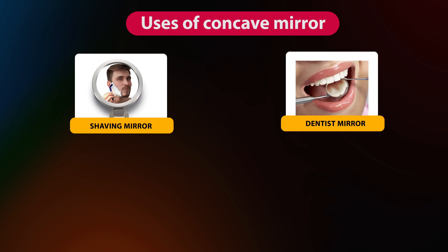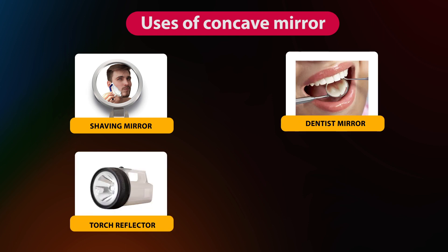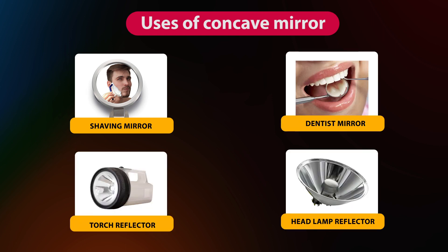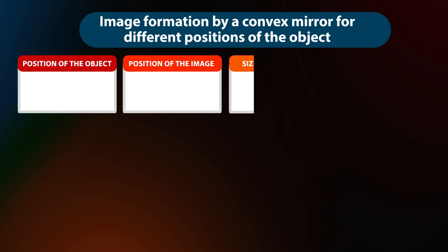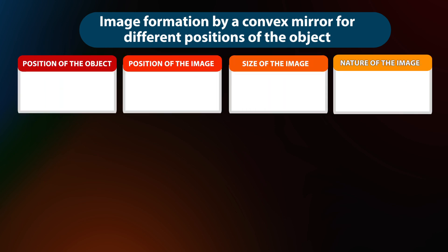Uses of concave mirrors: Concave mirrors are used as shaving mirrors and dentist mirrors. They are also used in the reflectors of torch lights and vehicle lights. Now we will see the image formation by a convex mirror. Here we consider only two positions of the object.